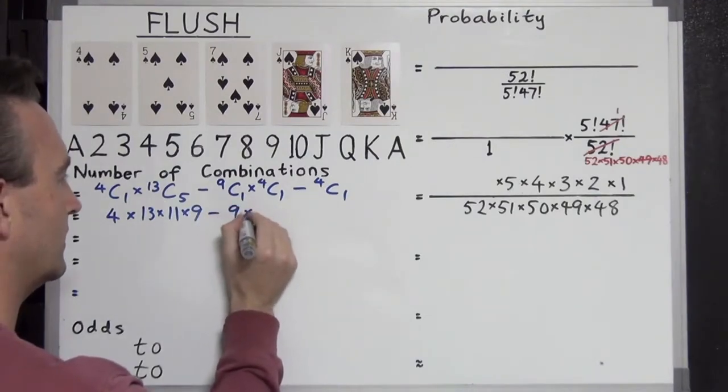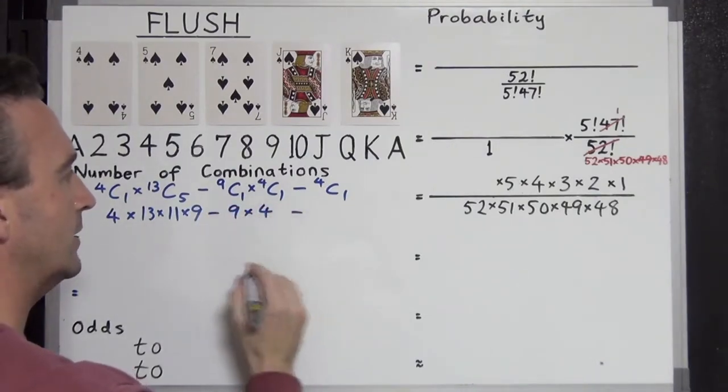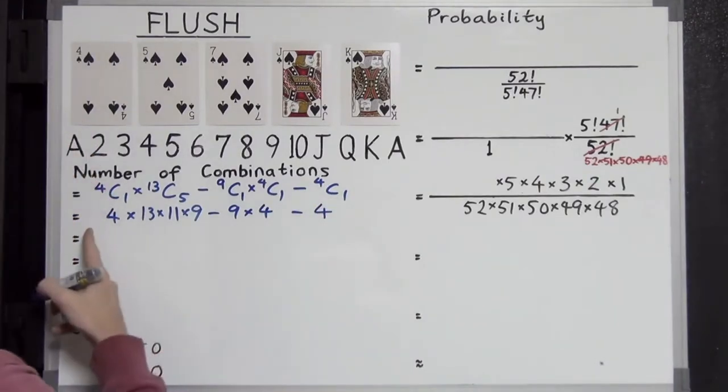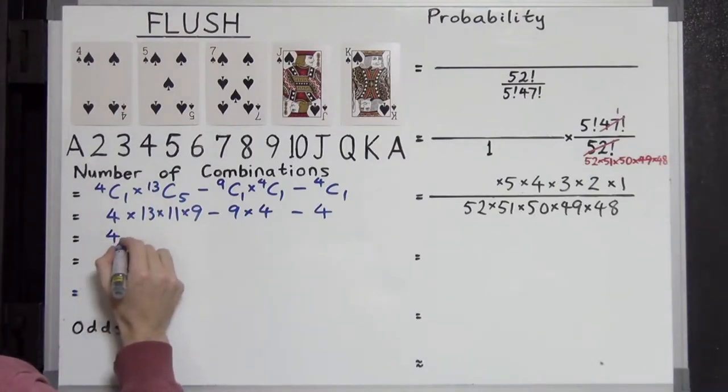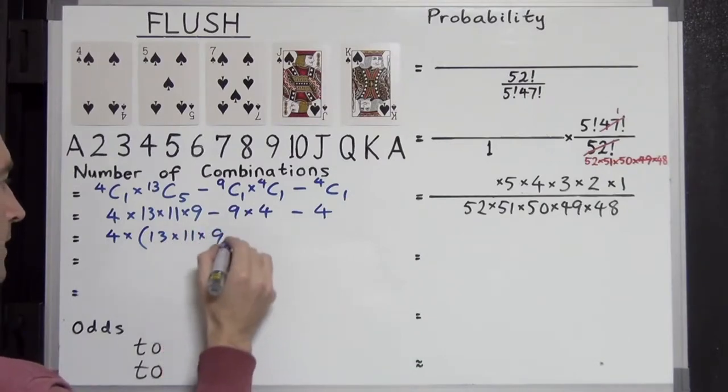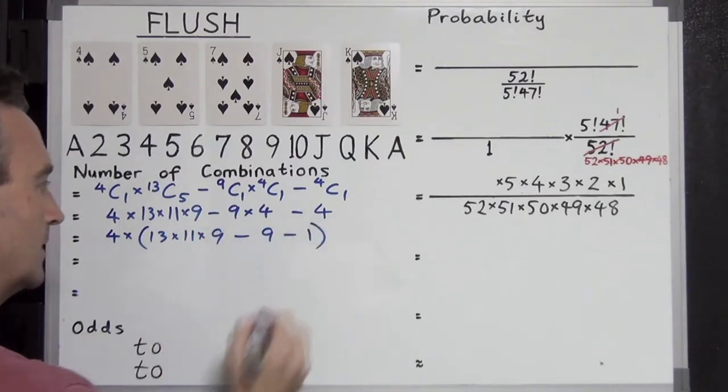9C1 is 9. 4C1 is 4. And over here 4C1 is just 4. This is where it gets cool. I'm going to factor out a 4 from all this stuff. Take out a 4 times and open some brackets. What's left?